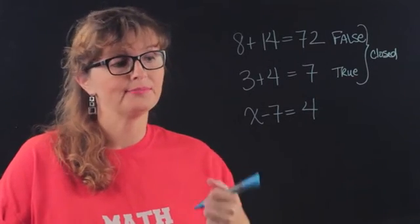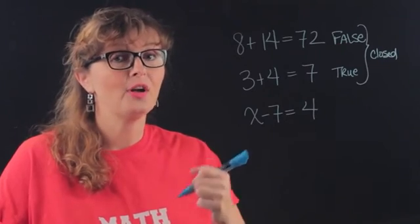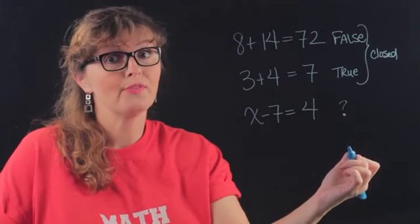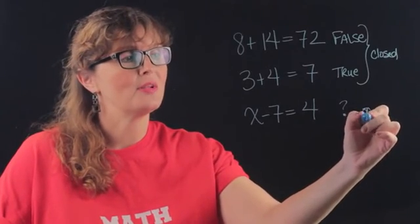x could be 85. If x is 85, that's a false sentence. So because this is who knows true or false, this is an open sentence.